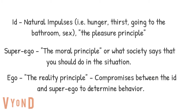The ego is the reality principle and compromises between the id and the superego to ultimately determine what you do. Sometimes you follow the id more, and sometimes you follow the superego more, and sometimes you do a compromise. Some people have a pattern of following their id more than their superego, so they may be more likely to express their impulses, whereas others are more likely to control their impulses and follow their superego more.